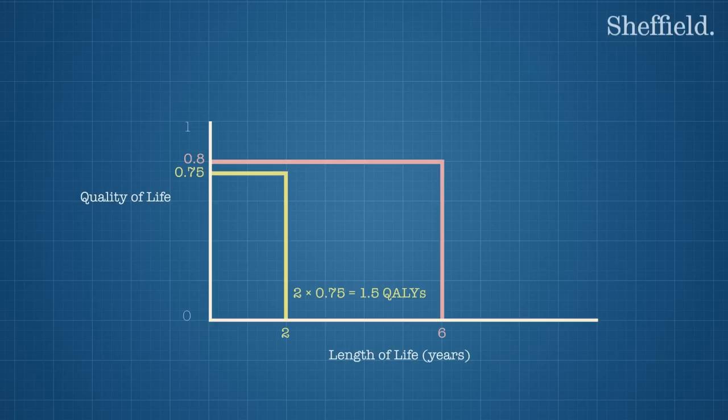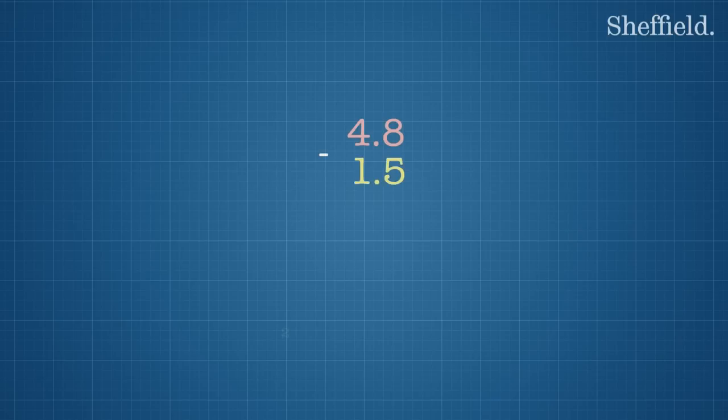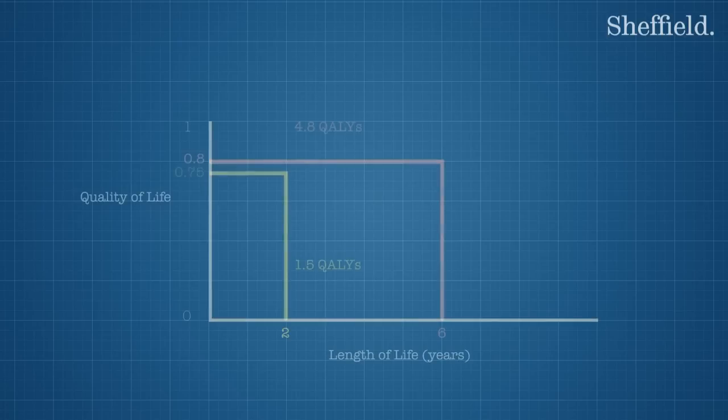With the new treatment, the patient can expect to live for 6 years at a quality of life valued at 0.8. 6 times 0.8 equals 4.8. Therefore the new treatment has a total of 4.8 QALYs. 4.8 minus 1.5 equals 3.3. Therefore the QALY gain is 3.3 QALYs.